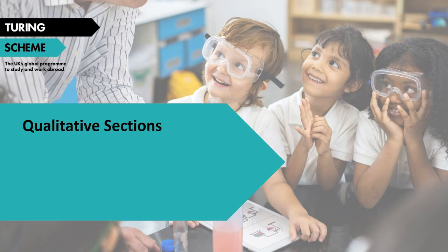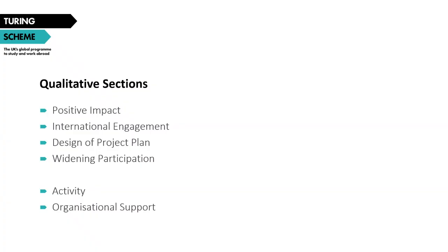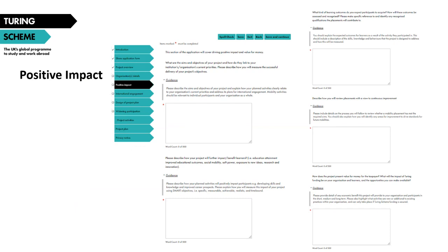We'll move on now to look at the qualitative sections of the form. There are four main qualitative sections: Positive Impact, International Engagement, Design of Project Plan, and Widening Participation. There are also two further sections requiring a narrative answer — for each month of activity you need to write a narrative explaining your choice of activities, and you also need to write about your proposed uses for the organisational support budget.